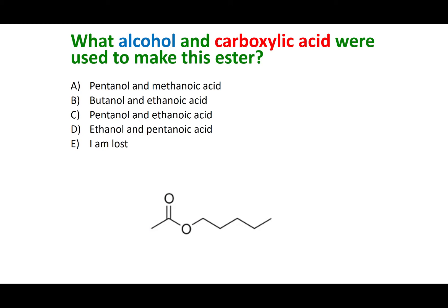Tell me what alcohol and carboxylic acid would make the ester shown. Cleave the bond between the carbonyl carbon and the oxygen in the ester. Draw the carbonyl carbon side and put an OH on it. Put an H onto the remaining oxygen, then draw the rest of the other side. The acid was two carbons long — that is ethanoic acid. The alcohol was five carbons long — that is pentanol. So ethanoic acid and pentanol should have been your answer.